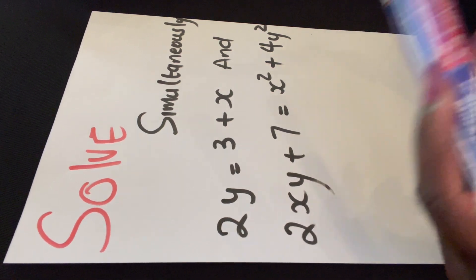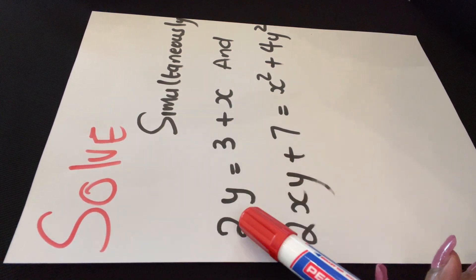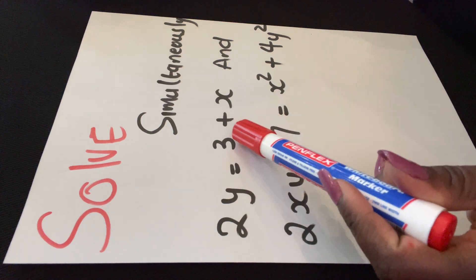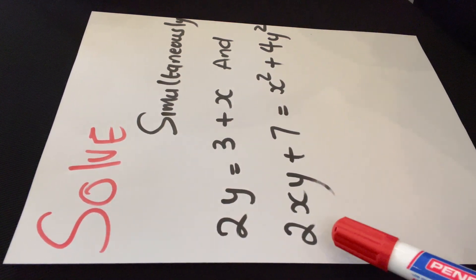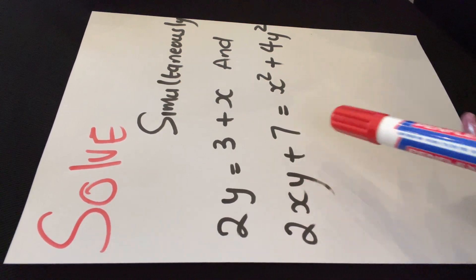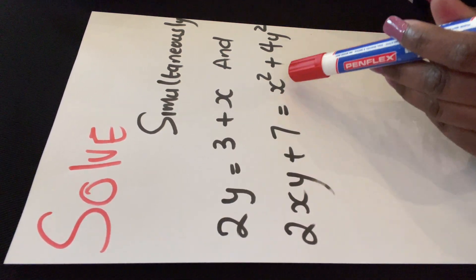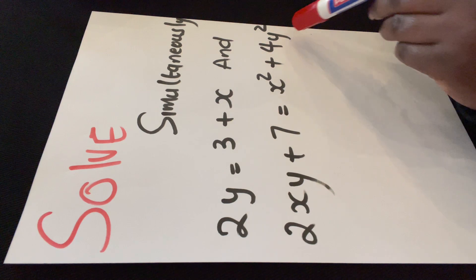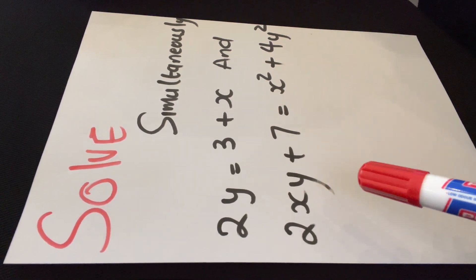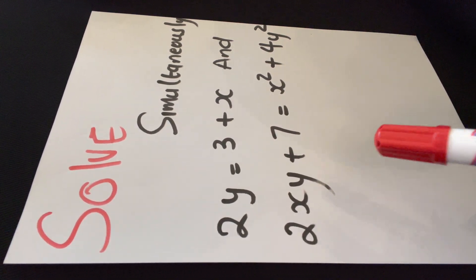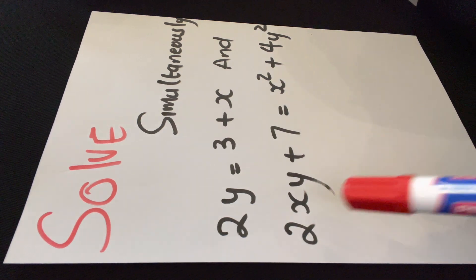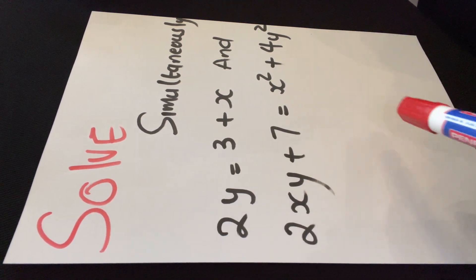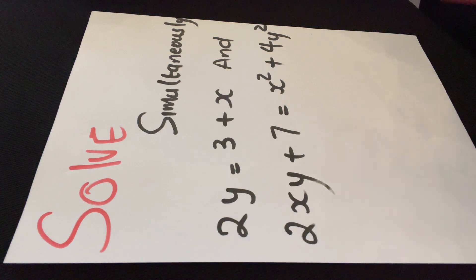We are given two equations. Our first equation is 2y = 3 + x, and the second equation is 2xy + 7 = x² + 4y². This question is taken from the November 2021 paper — I think it's question 1.2. If you have the questions, you can do it with me, or copy it from here.